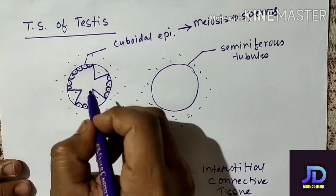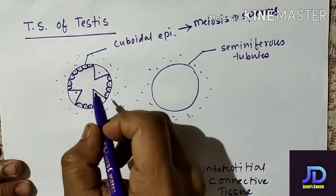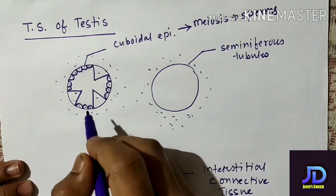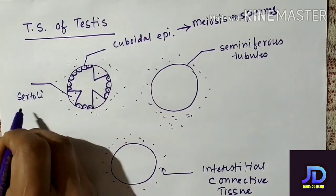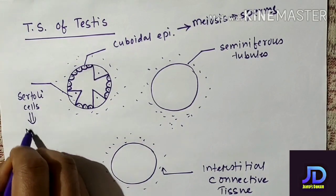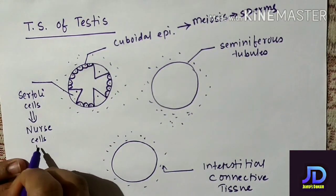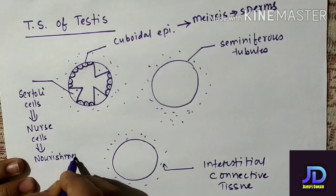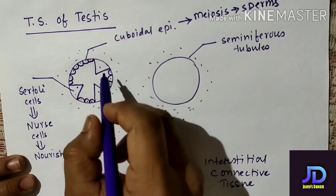There is another type of cell which are triangular, conical, and pyramid-shaped. These cells are known as Sertoli cells. These Sertoli cells are also called nurse cells because they provide nourishment to the developing sperms.